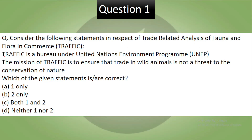Statement 1: TRAFFIC is a bureau under the United Nations Environment Program. Statement 2: The mission of TRAFFIC is to ensure that trade in wild animals is not a threat to the conservation of nature. Which of the given statements is incorrect?